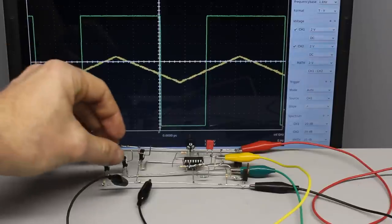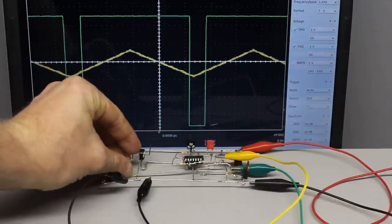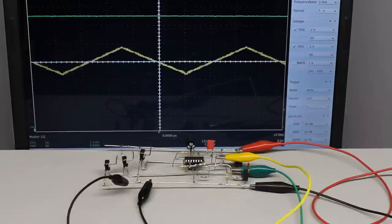Hence, the pulse width of the output signal is increasing with an increasing level of the triangular voltage.